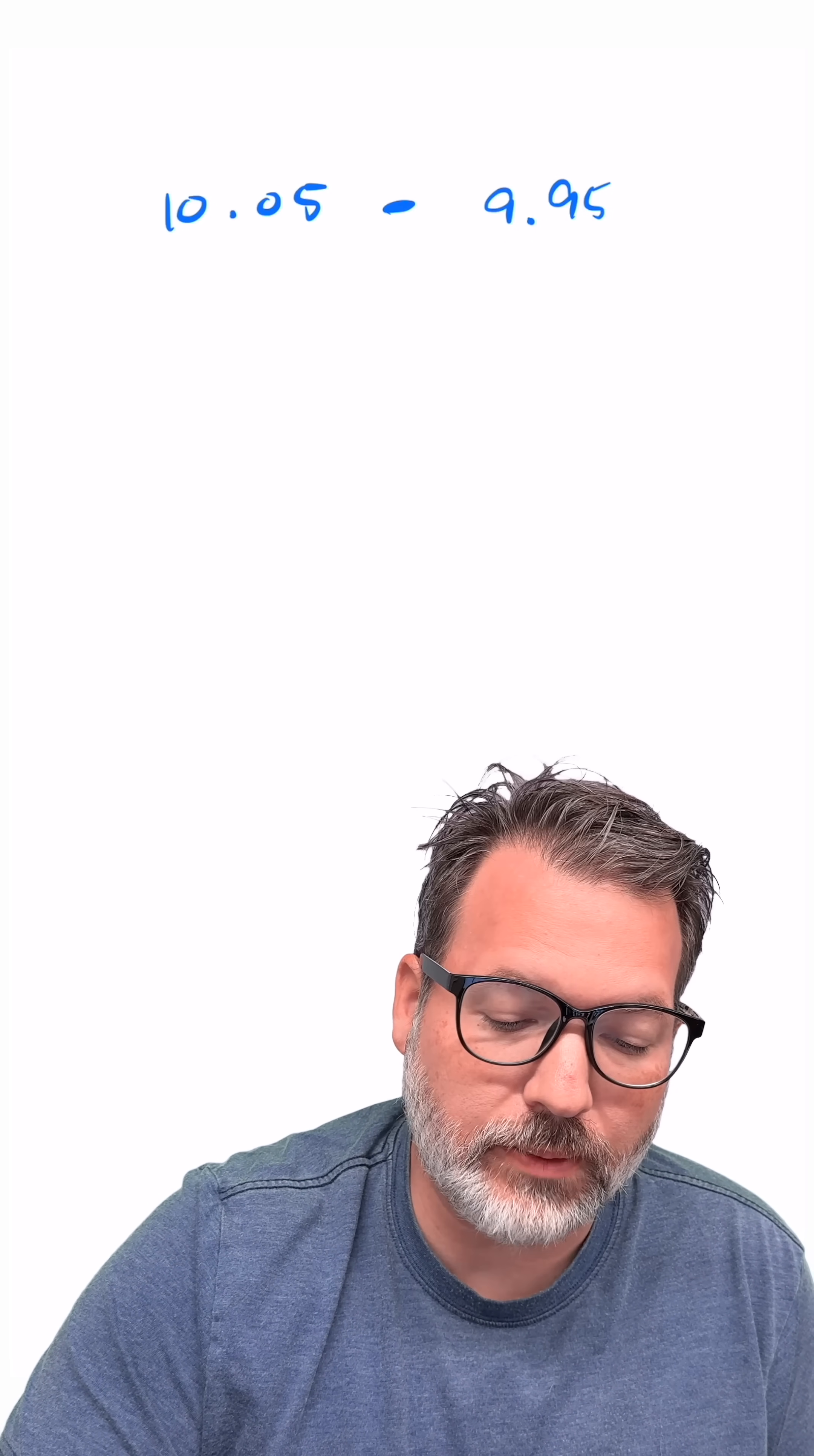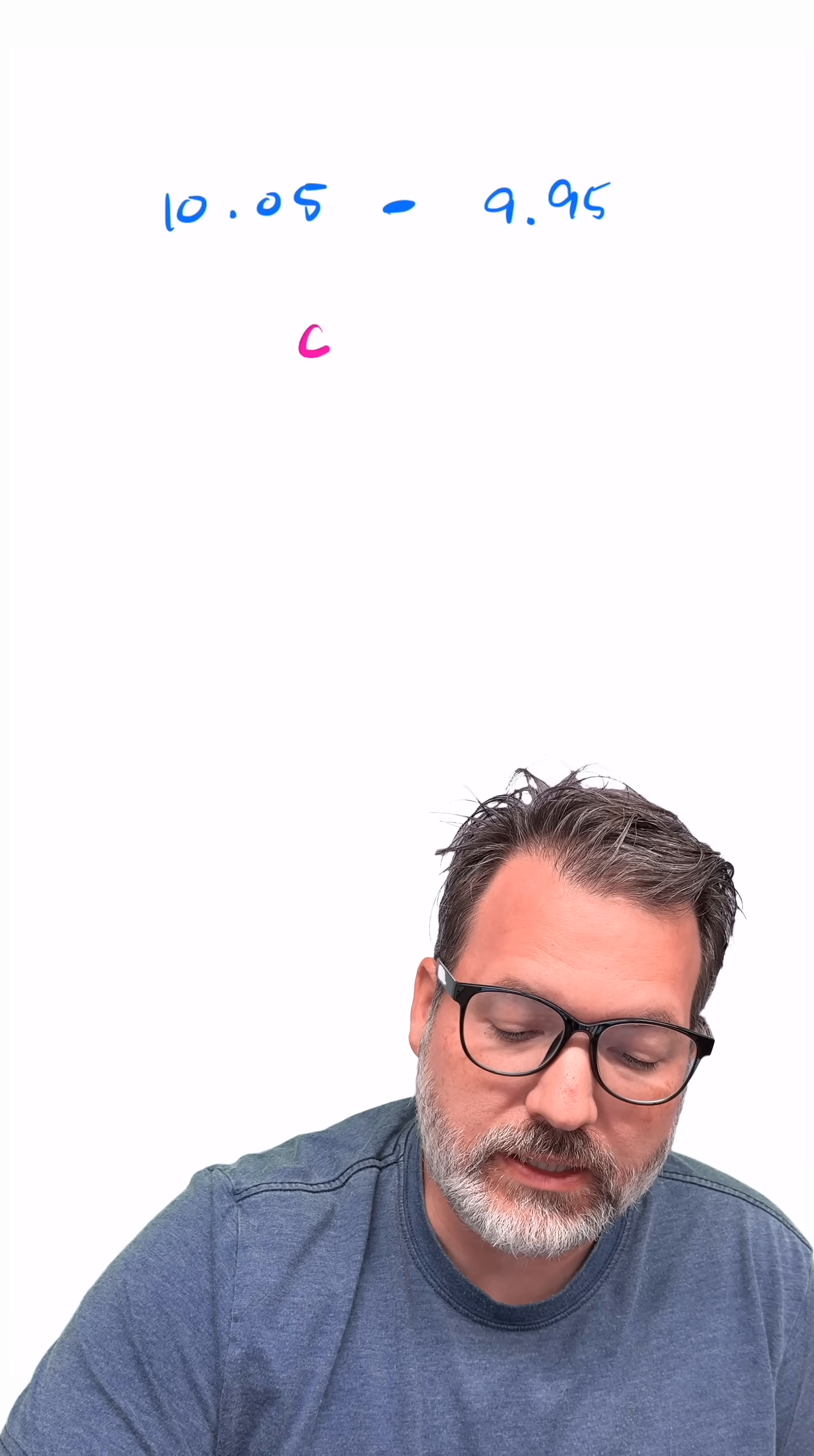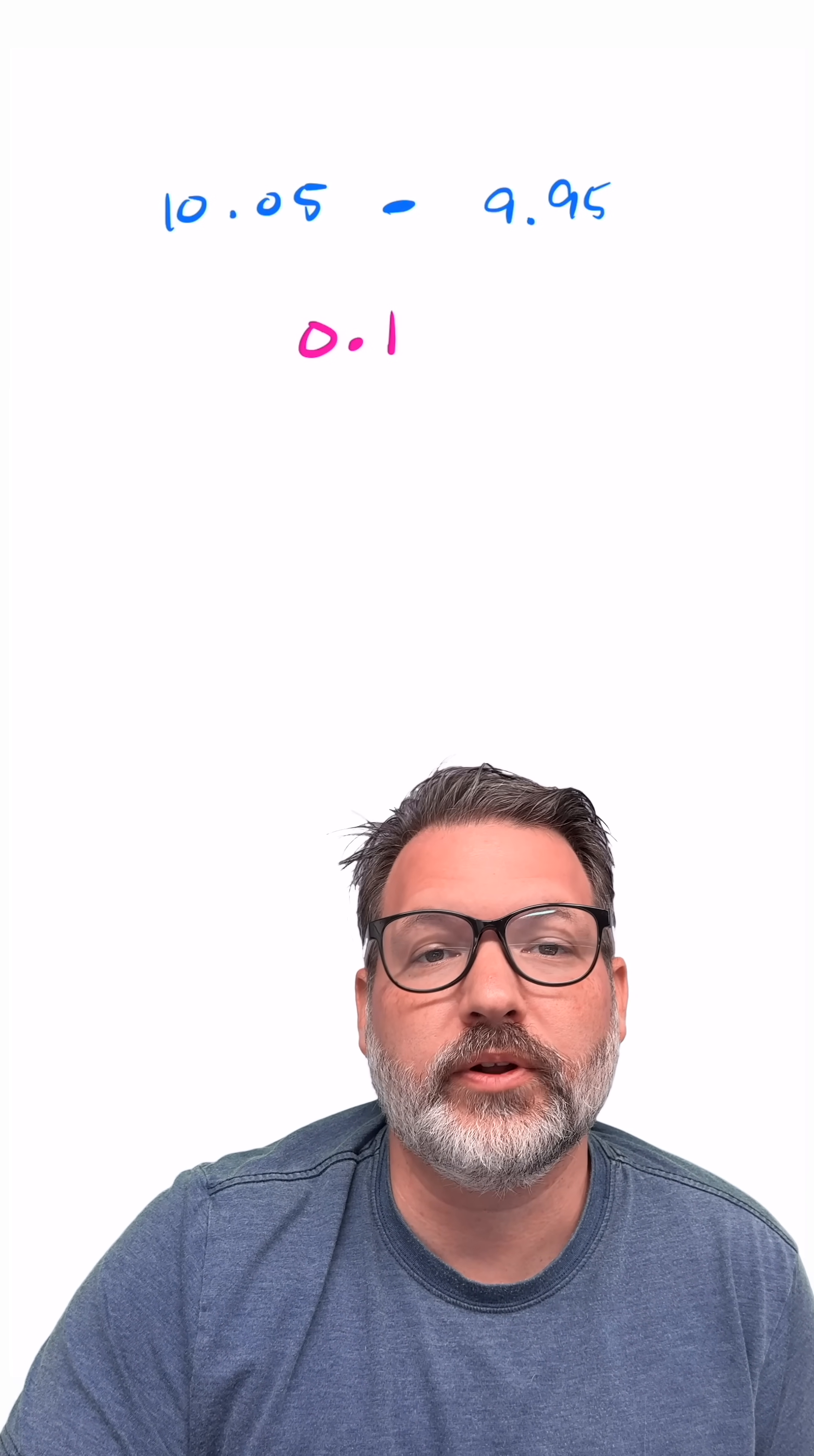Now, of course, we're just actually subtracting. 10.05 minus 9.95 is 0.1, which is a very good approximation for the difference between the square root of 101 and the square root of 99.